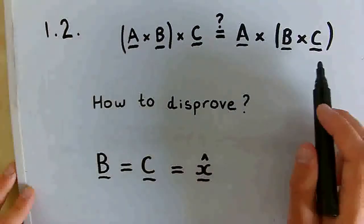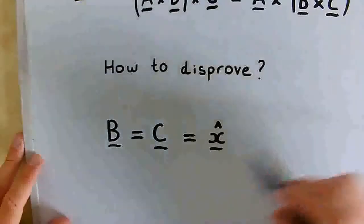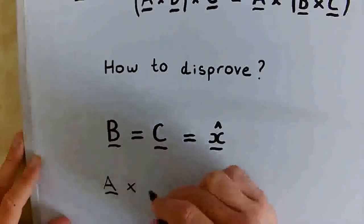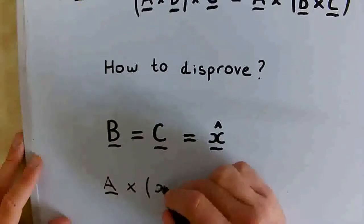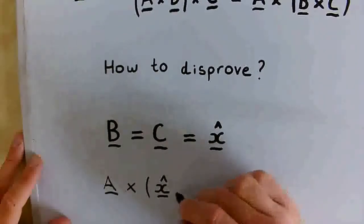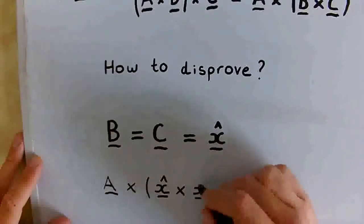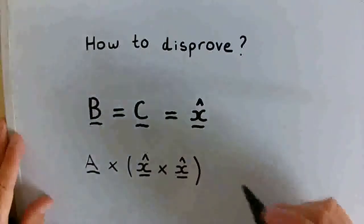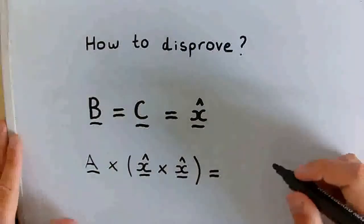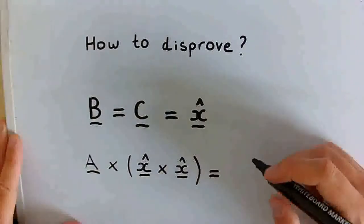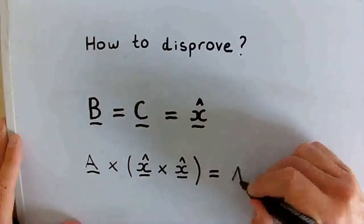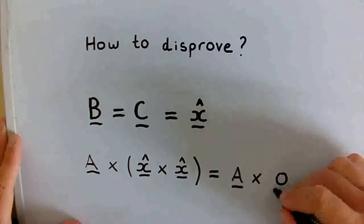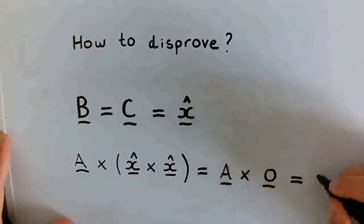So that means if we take the right-hand side here, we have any vector A crossed with the cross product of the unit vector in the x direction with itself. And then this bit here is actually zero because two identical vectors produce what you call a degenerate parallelogram with zero area. So we have the cross product of A with the zero vector, which is just the zero vector.